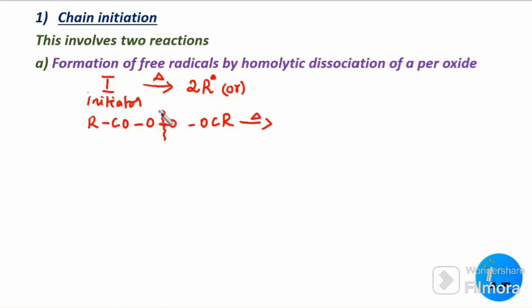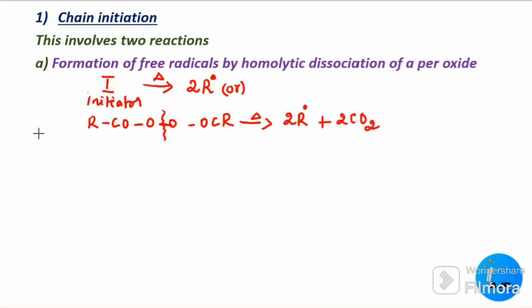Homo means same — here we have the same group on both sides, so this is a homolytic dissociation. It forms two free radicals: two R• plus two CO2. Thus, a free radical is formed during the first reaction of chain initiation.